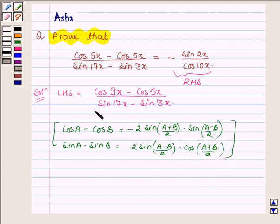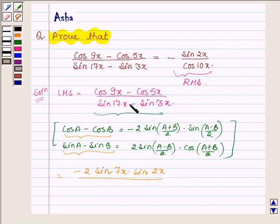So applying these two formulas on the left hand side, it can further be written as: In the numerator, applying the formula cos A minus cos B where A is 9x and B is 5x, we have minus 2 sin 9x plus 5x which is 14x upon 2 gives 7x into sin 9x minus 5x which is 4x upon 2 is 2x. Now in the denominator, applying the formula sin A minus sin B where A is 17x and B is 3x.